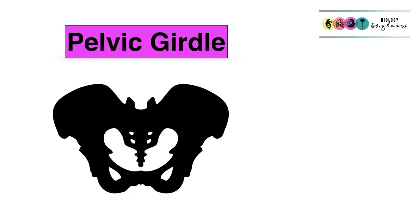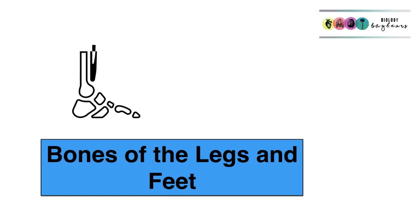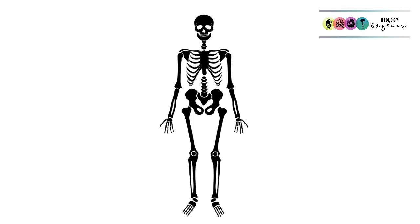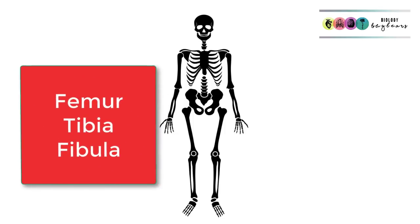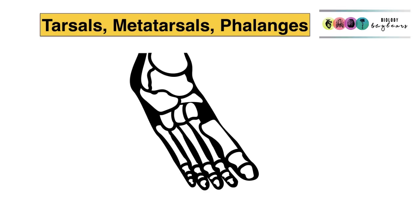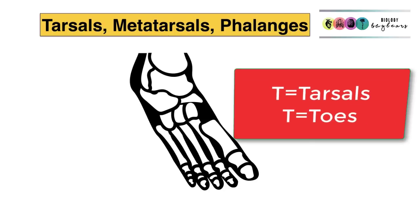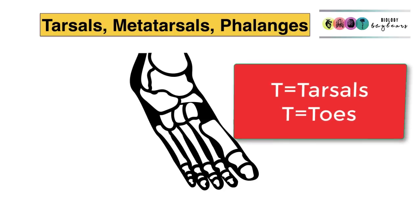The next part of the appendicular skeleton is the pelvic girdle, made up of your pelvis and the bones of the legs and feet. The bones of the legs are the femur, the tibia, and the fibula. The bones of the feet are the tarsals, metatarsals, and phalanges. Think of T for tarsals, T for toes.